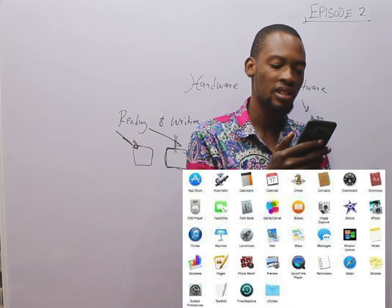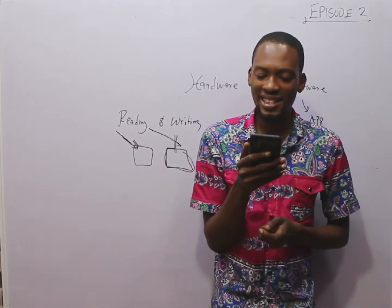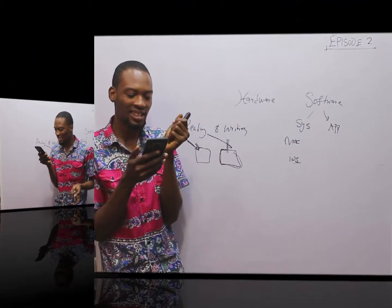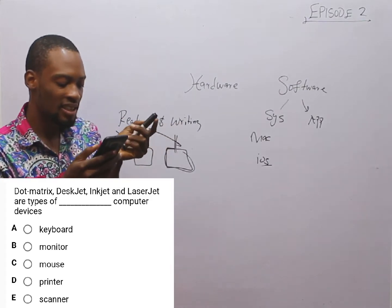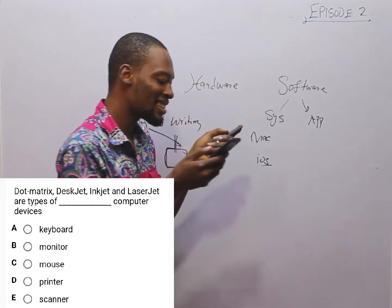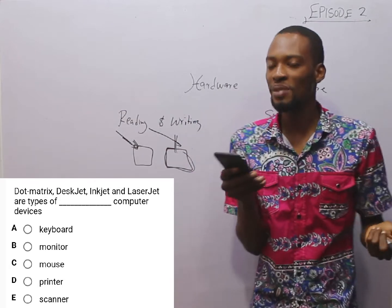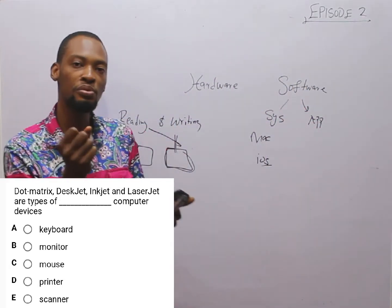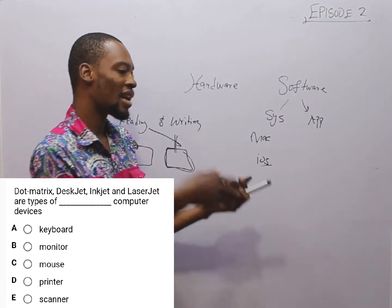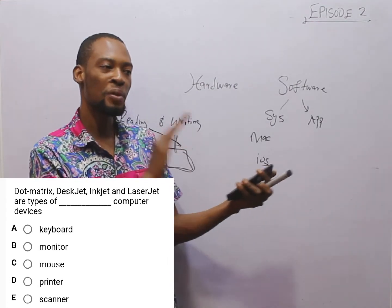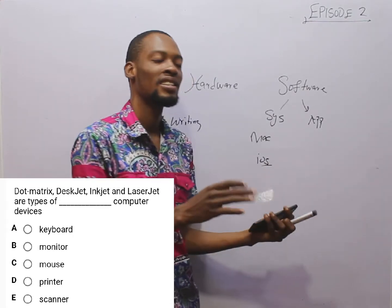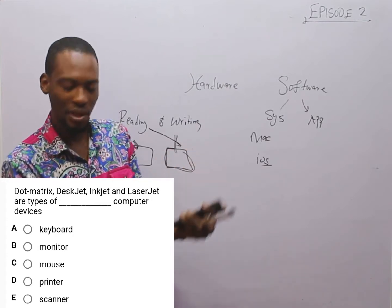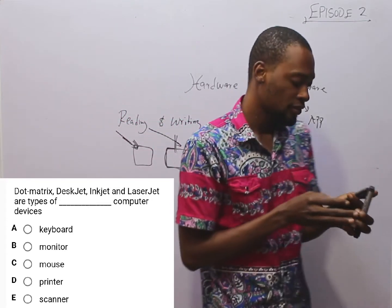This question covers dot matrix, DeskJet, InkJet, and LaserJet as types of dash computer devices. DeskJets, InkJets, LaserJets, band printers, laser printers, line printers, drone printers, and dot matrix printers — all these are examples of printers. A printer takes a blank A4 paper, puts it inside, and prints the information on the paper to give you a printed document.